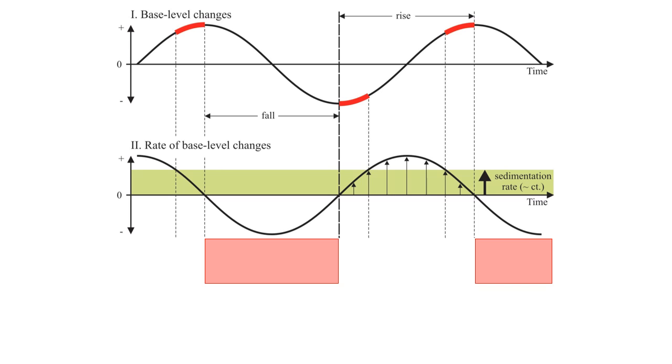So let's use this to divide this base level curve into sections. So there are times when base level is falling. Therefore the rate of base level change, which is the rate that accommodation space is being created, is negative. So because base level is falling, depositional systems incise, and the shoreline regresses, or builds oceanward.